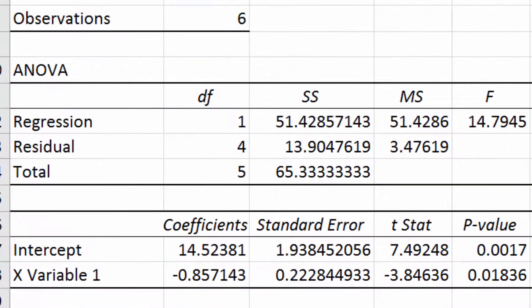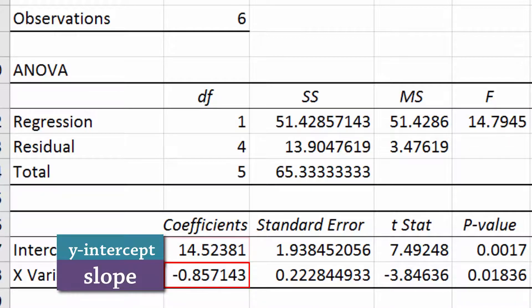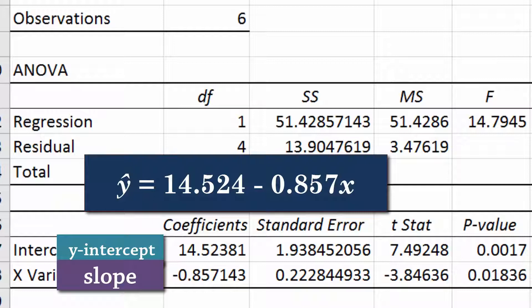At the bottom of the table here, the intercept coefficient is the Y-intercept. And under it, we have the slope. Thus, the regression line is Y hat equals 14.524 minus 0.857x.